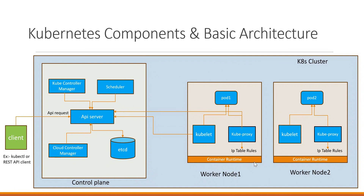These container runtimes should conform with the container runtime interface provided by CNCF. For example, we can use ContainerD, CRIO, or Docker Engine as container runtimes in the Kubernetes cluster. Here we are showing two worker nodes; we can have a minimum of one worker node to run our containerized application. Once the container runtime is installed in the worker node, there is another component called kubelet which will invoke this container runtime to create containers of our application. Kubelet is installed in every worker node to create the containers of our applications.